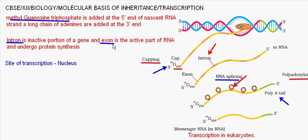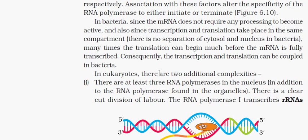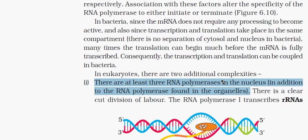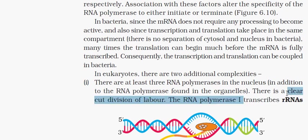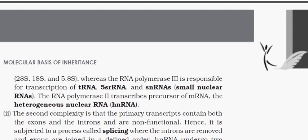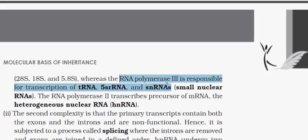In eukaryotes, there are at least three RNA polymerases in the nucleus, in addition to RNA polymerases found in organelles. RNA polymerase 1 transcribes rRNAs — specifically 28S, 18S, and 5.8S. RNA polymerase 3 is responsible for transcription of tRNA, 5S rRNA, and snRNA (small nuclear RNA). RNA polymerase 2 transcribes the precursor of mRNA, called heterogeneous nuclear RNA (hnRNA), after which splicing, capping, and tailing (polyadenylation) are done.